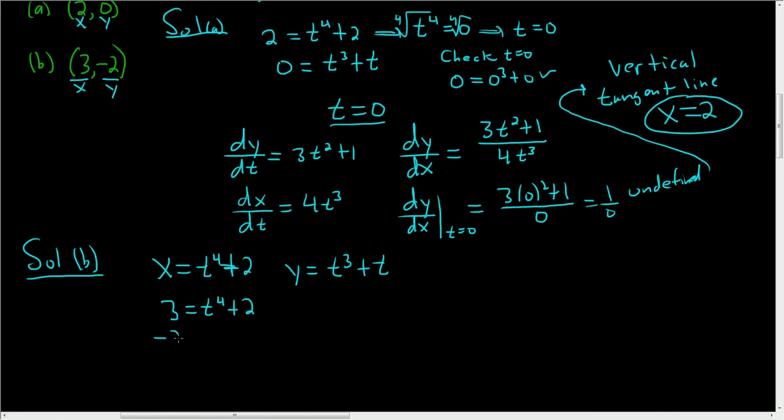So it looks like the first equation is easier to solve. If we subtract 2 from both sides, that gives us t to the fourth equals 1. And so when we take the fourth root, we get t equals plus or minus 1.